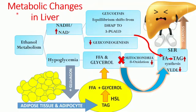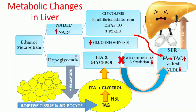These are the various metabolic changes the liver undergoes during ethanol metabolism. When the NADH to NAD ratio rises, the first pathway to be affected is glycolysis. The equilibrium will shift after fructose-1,6-bisphosphate cleaves into dihydroxyacetone phosphate and 3-phosphoglycerate, and more 3-phosphoglycerate will be formed. The second change is a reduction in gluconeogenesis, which leads to hypoglycemia.